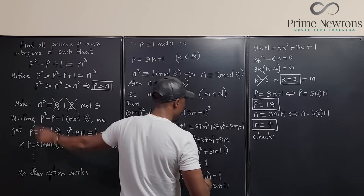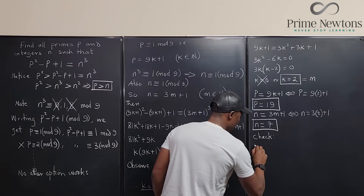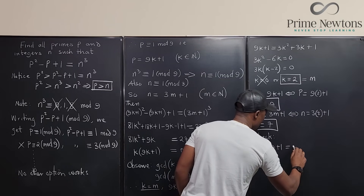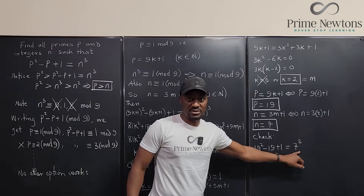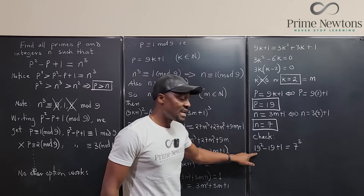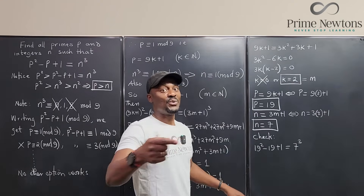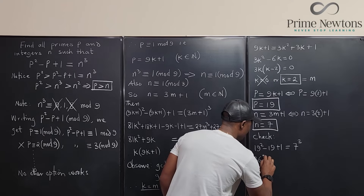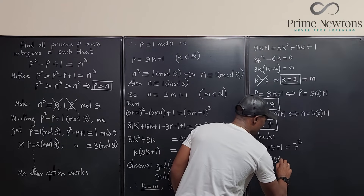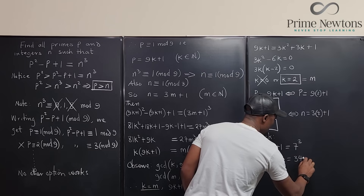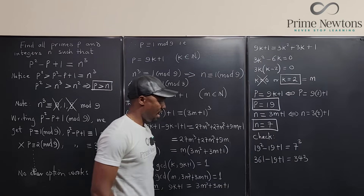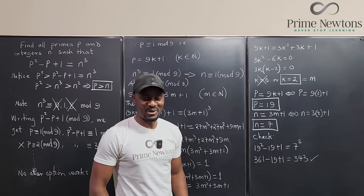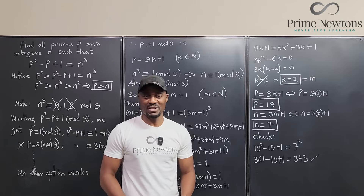Let's verify: p squared is 19 squared equals 361. So 361 minus 19 plus 1 equals 343, and 7 cubed is 343. Yes, it checks out. Never stop learning — bye-bye.